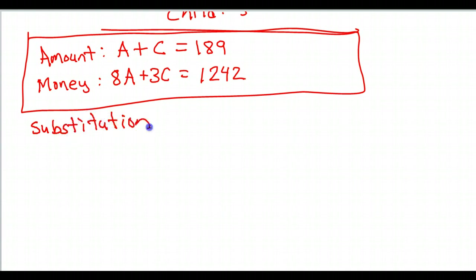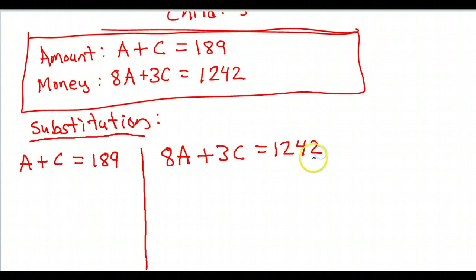Substitution. Here's how substitution works. When we solve it by substitution, I think it's easiest if we write the equations horizontally. So, A plus C is equal to 189. That's the first equation. And then the second equation is 8A plus 3C is equal to 1,242.